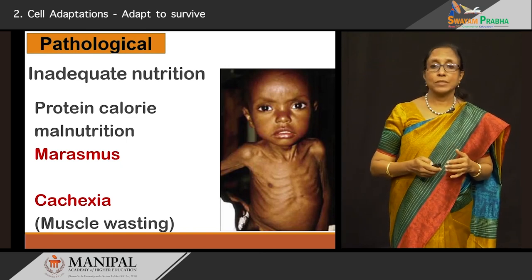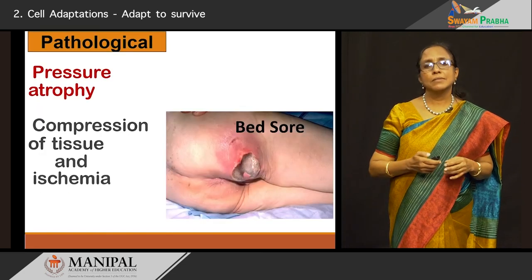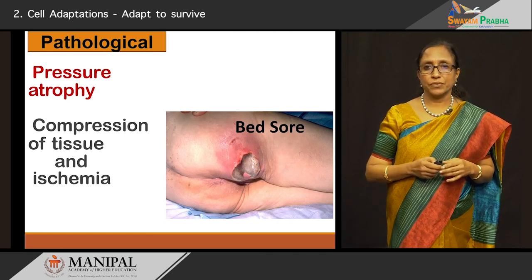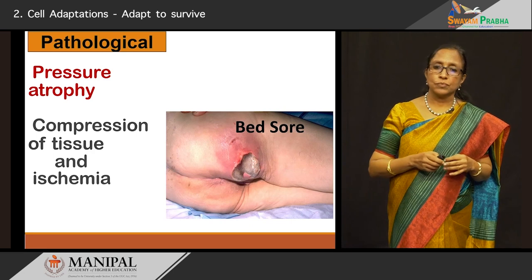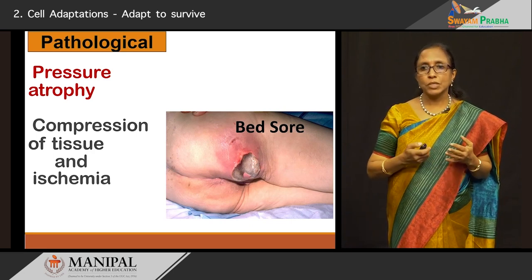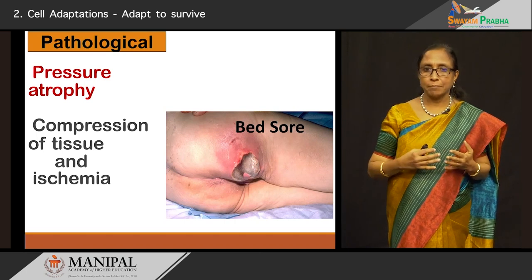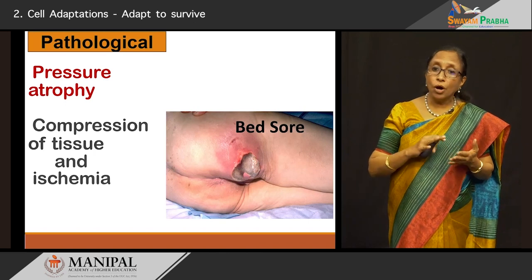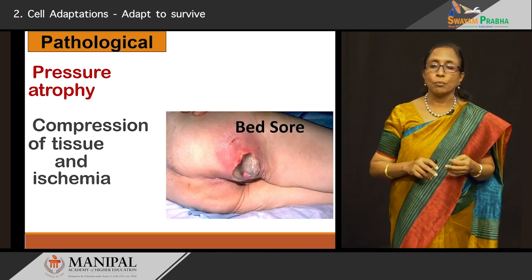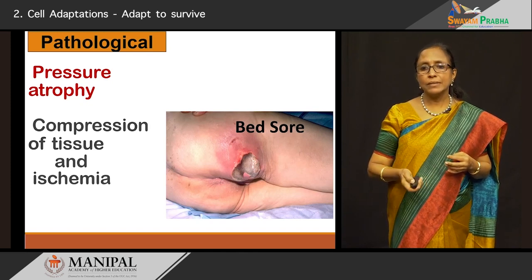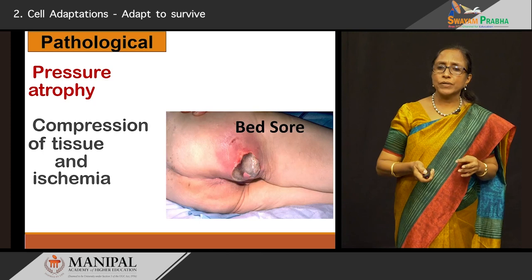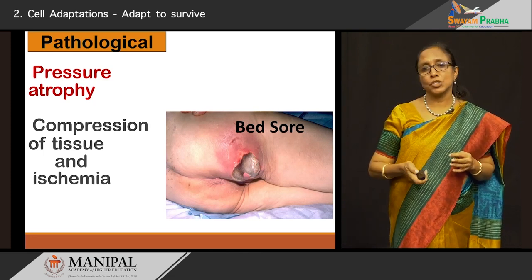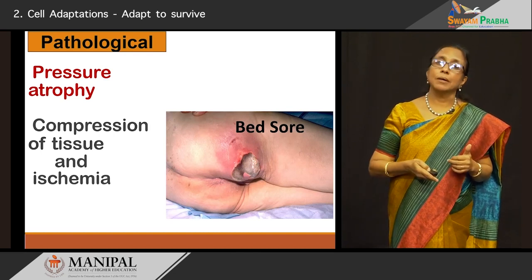Another form is pressure atrophy. Compression of the tissues by pressure, as seen in a bedsore which can occur in any person who is bedridden for quite some time. Compression of the tissue against a hard surface along with ischemia can cause the bedsore to form — this is called pressure atrophy. In such cases it is not just atrophy; there is also superadded infection with even necrosis of the tissues.